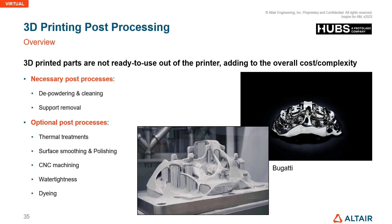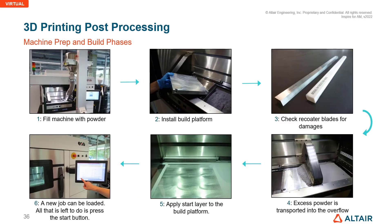Optional post-processes for 3D metal printed parts include thermal treatments, surface smoothening, surface polishing, water tightness testing, dyeing, and CNC machining. For the machine prep and build phase: the machine is filled with powder, the build platform is installed, re-coater blades are checked for damage, excess powder is transferred to overflow, a start layer is applied to the build platform, and the print job is submitted.